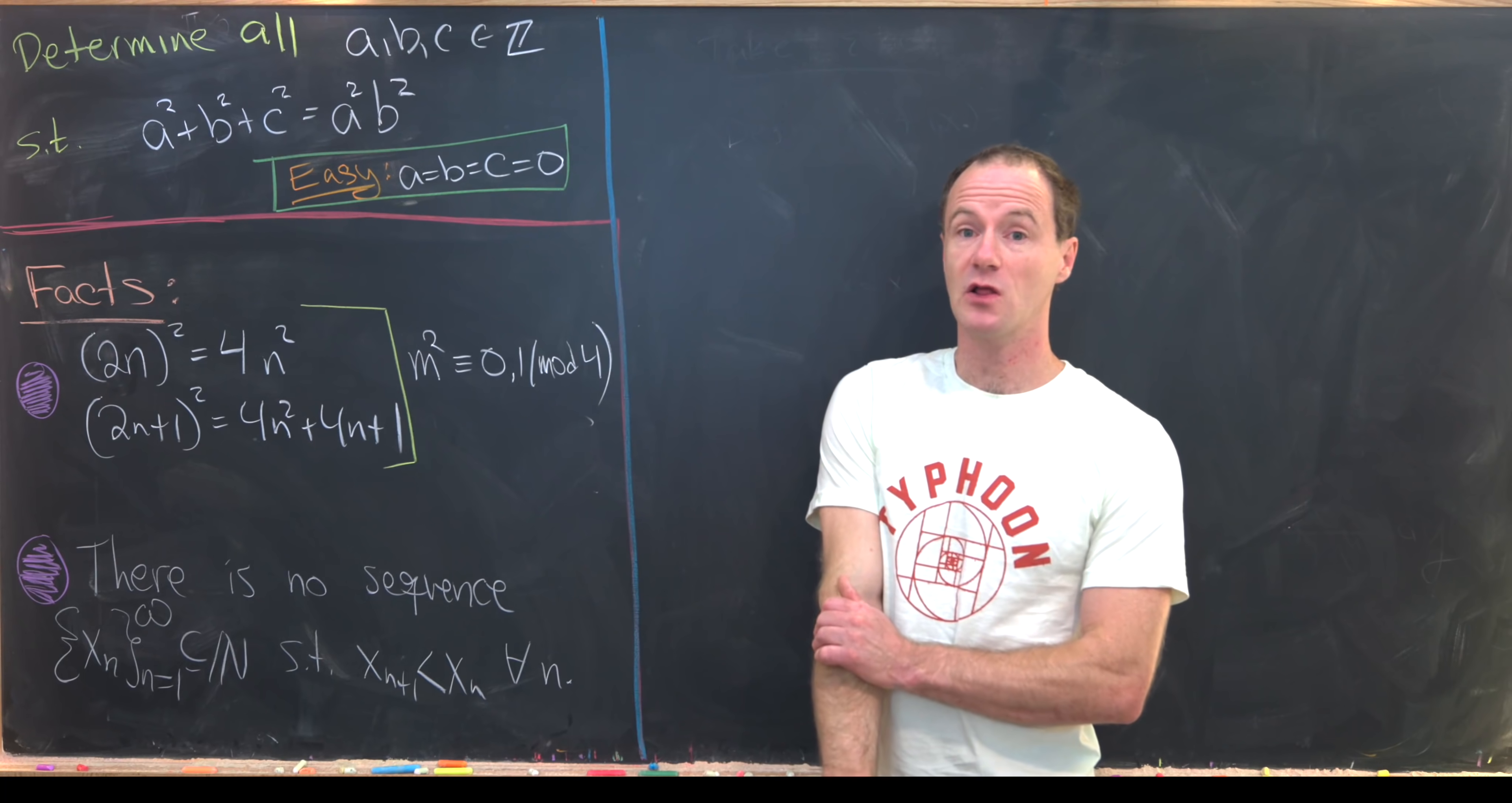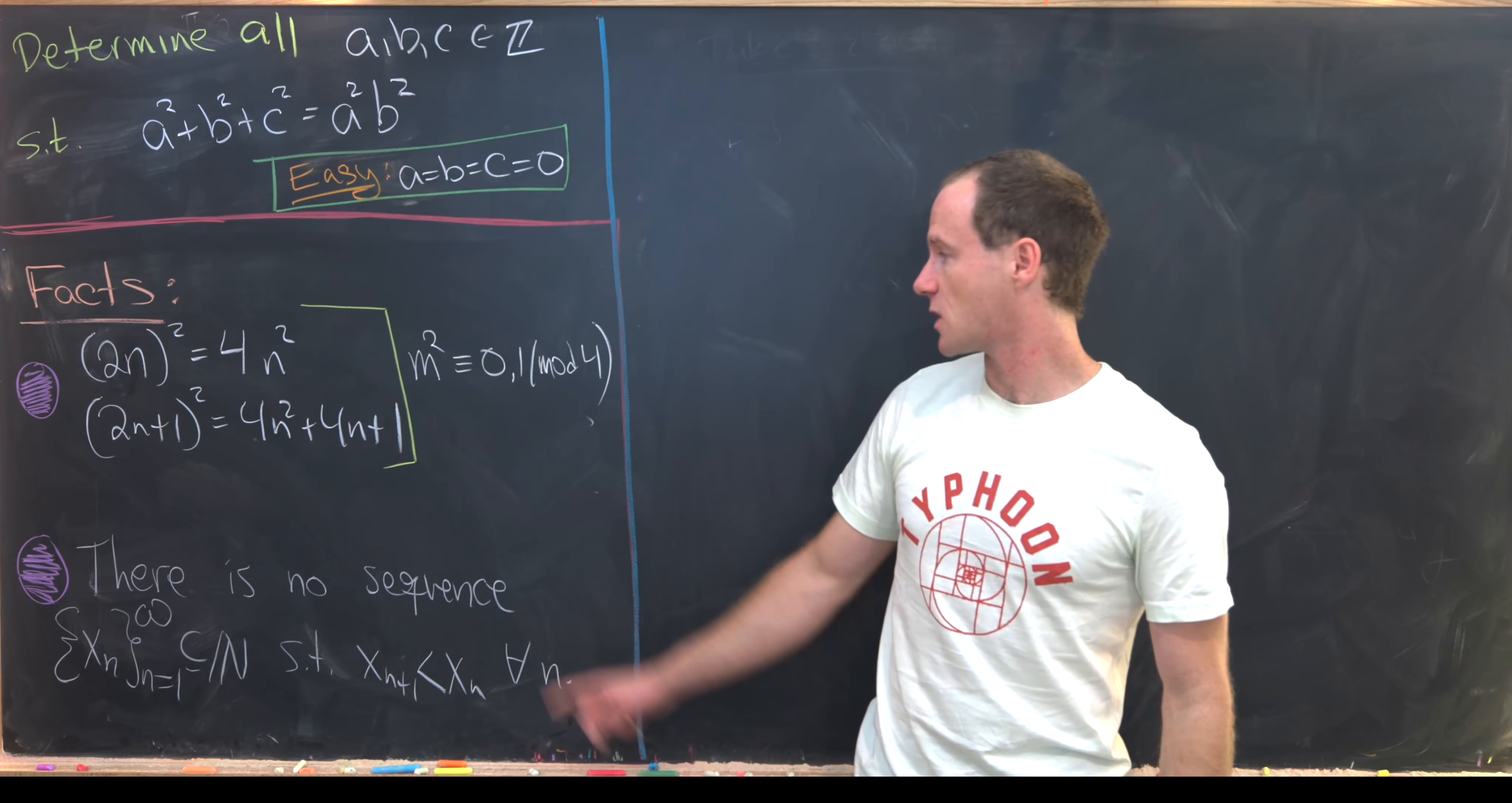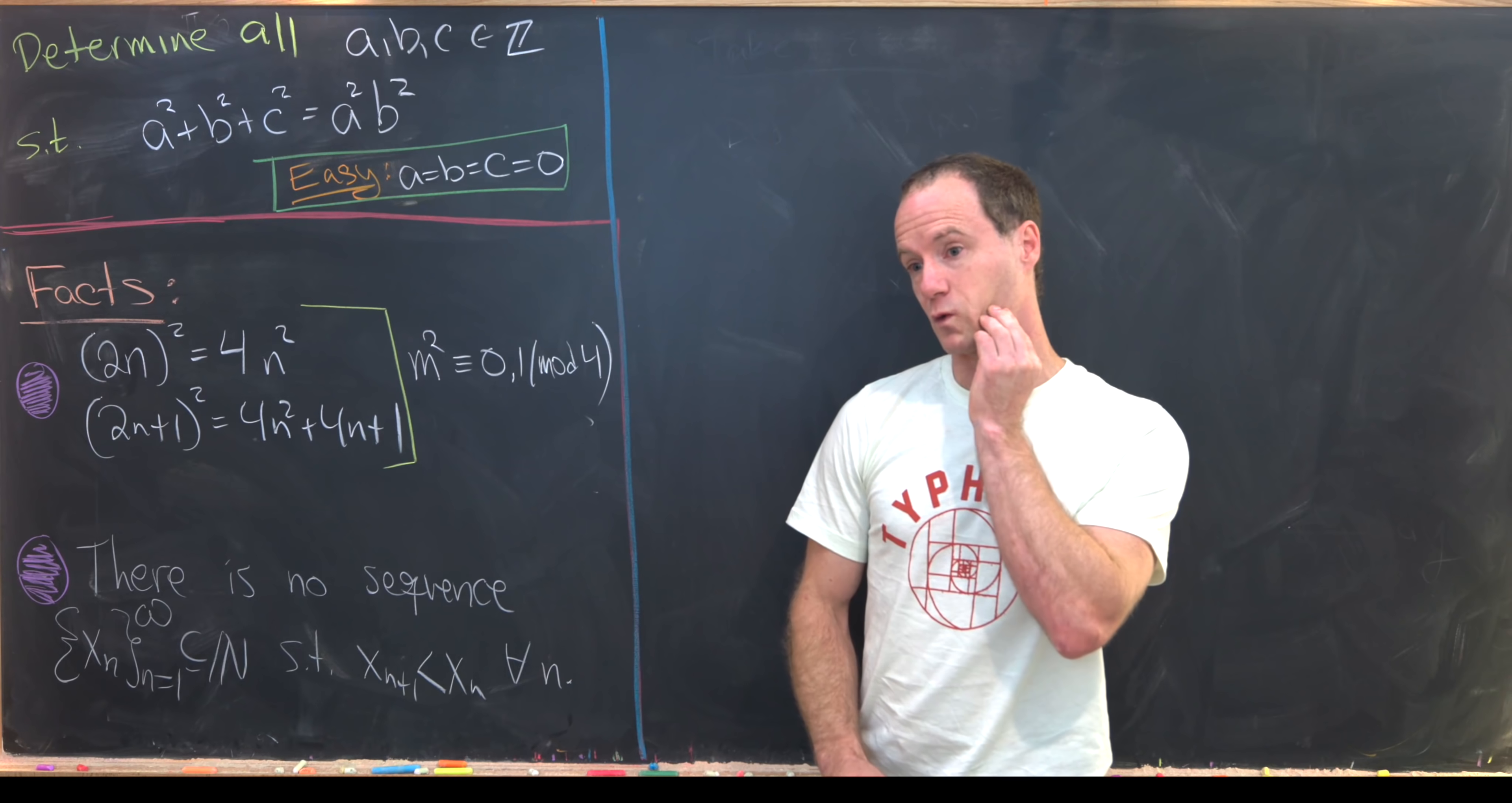We'll use the following number theory facts or tricks if you will. The first is that perfect squares are only congruent to 0 or 1 mod 4. So in other words, if you divide a perfect square by 4, your only possible remainders are 0 or 1.